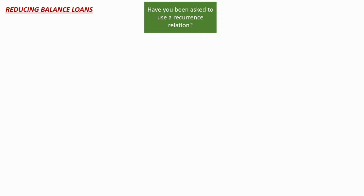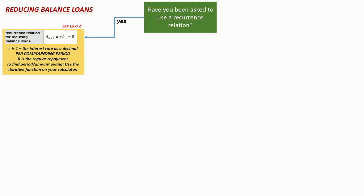You may be wondering why some boxes are green and some blue — green simply indicates your starting position for each slide. With the reducing balance loan, you first ask yourself: have you been asked to use a recurrence relation? If the answer is yes, it's fairly straightforward — on your QCAA formula sheet you have the recurrence relation for a reducing balance loan. Recall that R is one plus the interest rate as a decimal per compounding period, and capital R is the regular repayment.